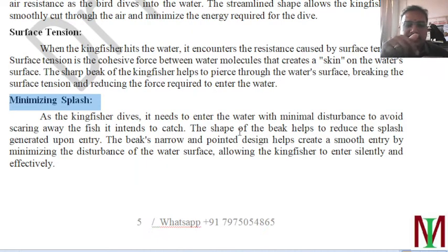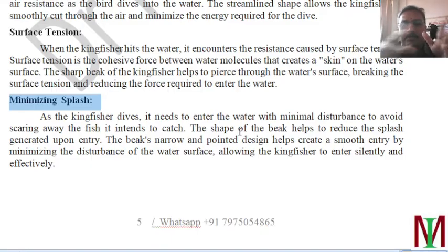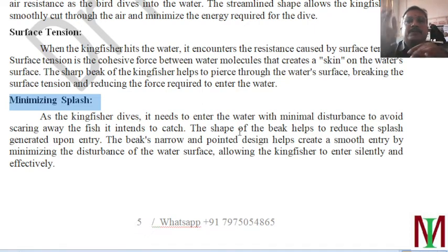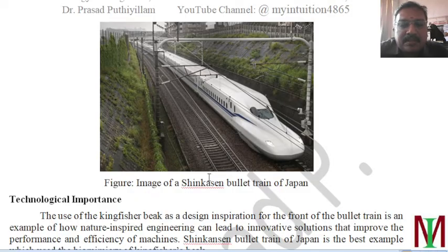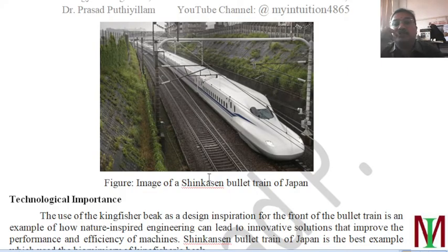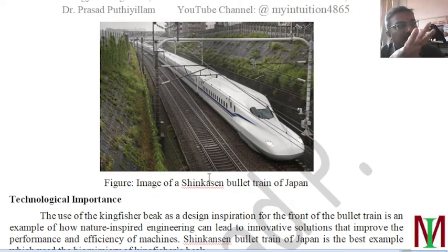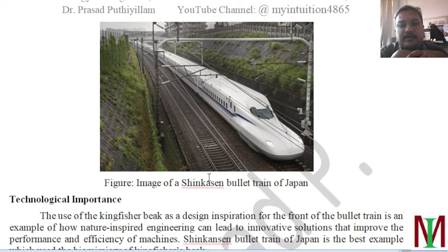If the kingfisher's beak caused a splash, the shock wave would alert fish, allowing them to escape. So the sharp beak shape lets the bird enter the water silently, catch the fish, and come out. The same concept was applied by Japan's engineers to the Shinkansen bullet train, because the train must penetrate air at very high speed. Without the right shape, passing through a tunnel and exiting would create a large sonic boom effect.